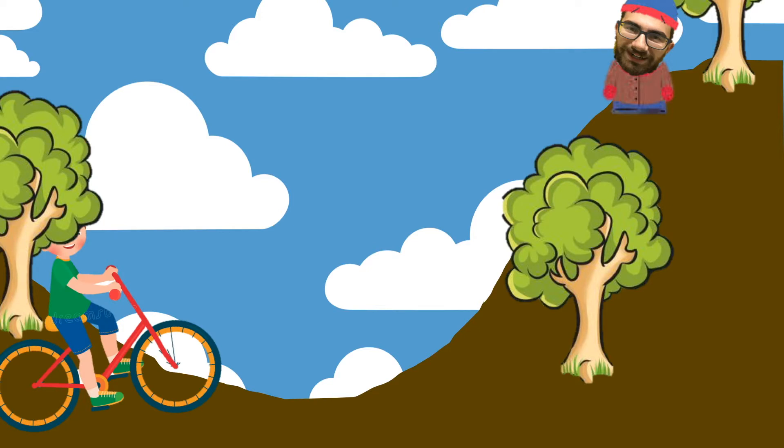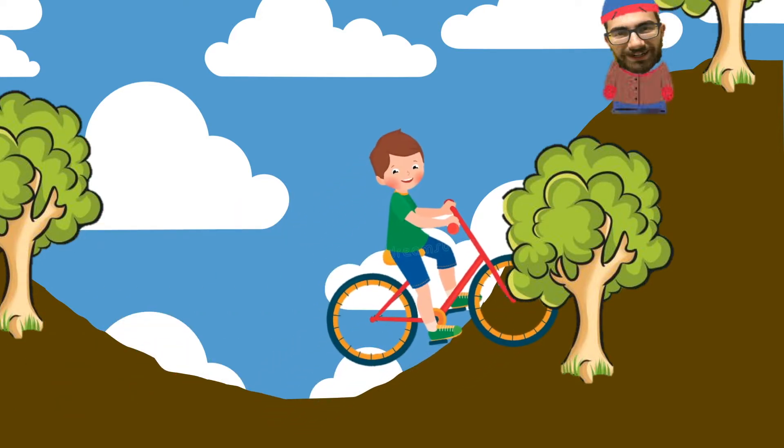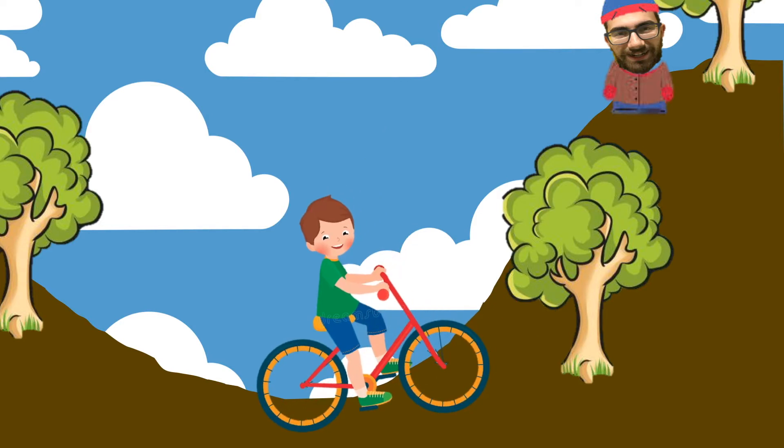This is Ricardo. He tries to go up the hill but he can't. Why? Because he doesn't have enough energy to do it. This is what we call an unfavorable situation.